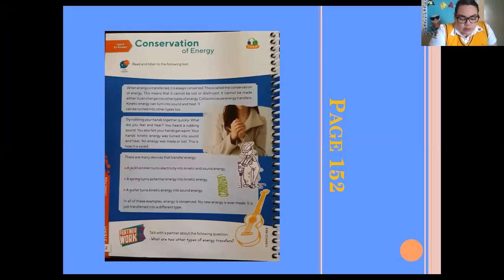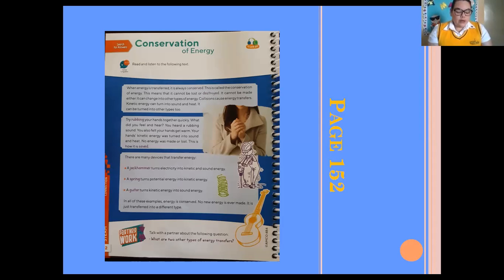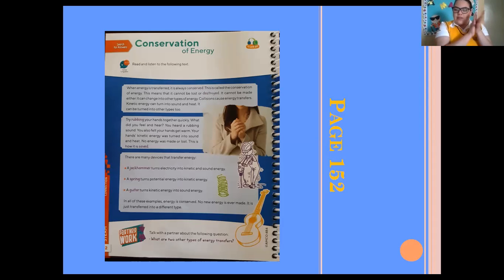When energy is transferred, it is always conserved. This is called the conservation of energy. This means that it cannot be lost or destroyed. It cannot be made either. It can change into other types of energy. Collisions cause energy transfers. Kinetic energy can turn into sound and heat. Try rubbing your hands together quickly — you hear a rubbing sound and you also felt your hands get warm. Your hands' kinetic energy was turned into sound and heat. No energy was made or lost.